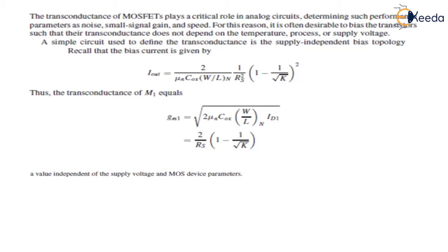So in this section, we will take a simple circuit which is used to define the transconductance — that is the supply-independence bias topology. Recall, in the very beginning, we have derived this equation for the bias current. For the two transistors we have taken, they are identical and we have found I_out to be equal to 2 divided by (μn·Cox·W/L)·n · (1/Rs)² · [1 − 1/√k]².